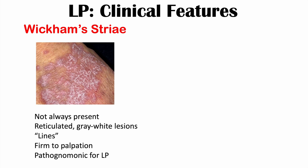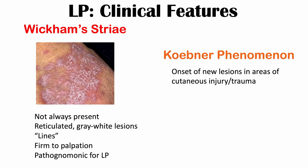Another finding is Koebner's phenomenon — the onset of new lesions in areas of cutaneous injury or trauma. If a part of the body is not affected and the patient has an injury or even scratches that area, it can lead to new lichen planus cutaneous lesions.